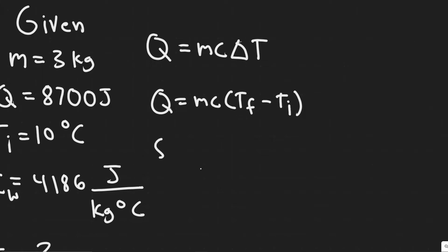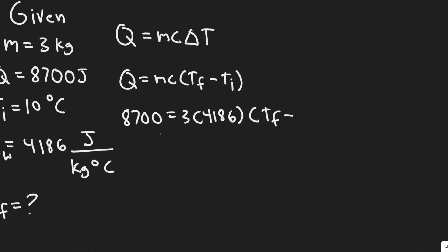And now we just got to plug it in. So we know Q is 8,700, and then this is 3. This is 4,186 times T final, which we're solving for, minus our initial temperature, which is 10 degrees Celsius.